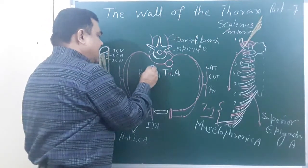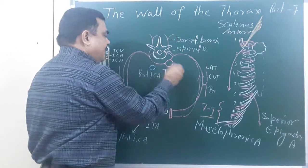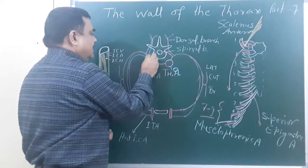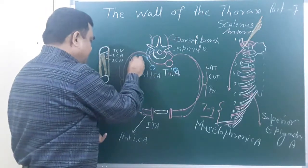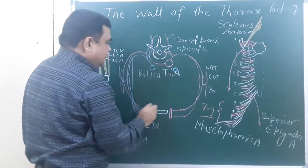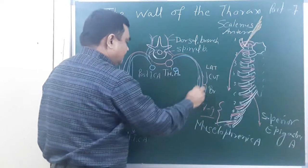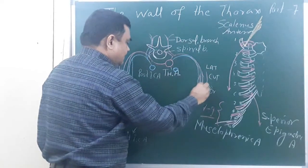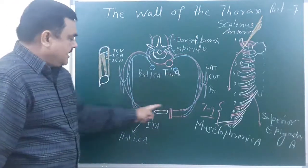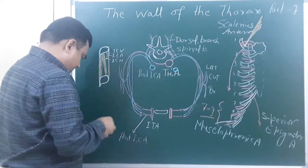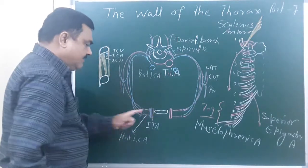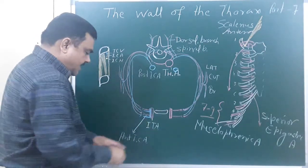Here is the venous drainage. Here is the azygos vein, and on this side is the hemi-azygos vein, these veins accompanying the artery. The anterior intercostal veins are accompanied with the artery. Here is the internal thoracic artery, and here is the internal thoracic vein which accompanies the artery, along with the anterior intercostal vein.